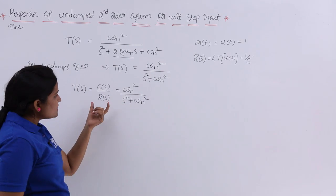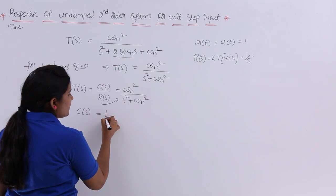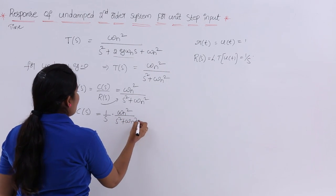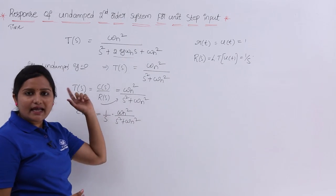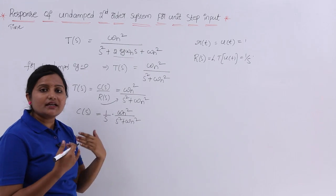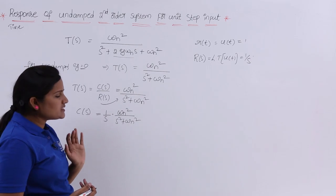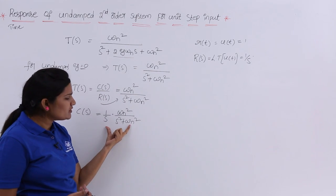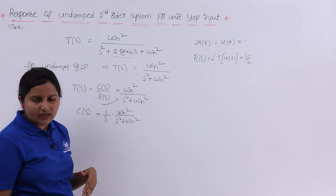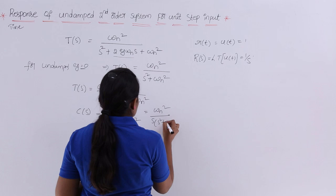Substituting R(s) = 1/s, we can find C(s). So C(s) = (1/s) × ωn² / (s² + ωn²), which gives C(s) = ωn² / [s(s² + ωn²)]. To find the time response c(t), we need to take the inverse Laplace transform of this expression. However, this is not in a simple standard form, so we need to use partial fractions.